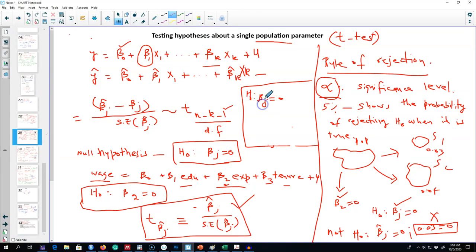This could be our null hypothesis: that beta j, any particular beta, is equal to 0. Our alternative hypothesis could be that beta j is negative or positive. More generally, we can say that beta j is not equal to 0. These are some of the types of hypotheses we will be testing.